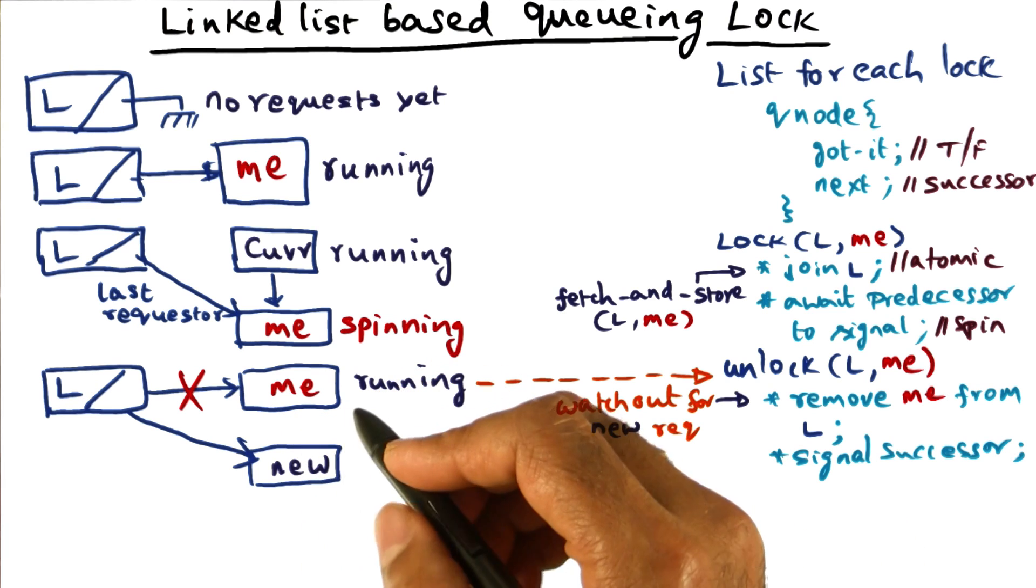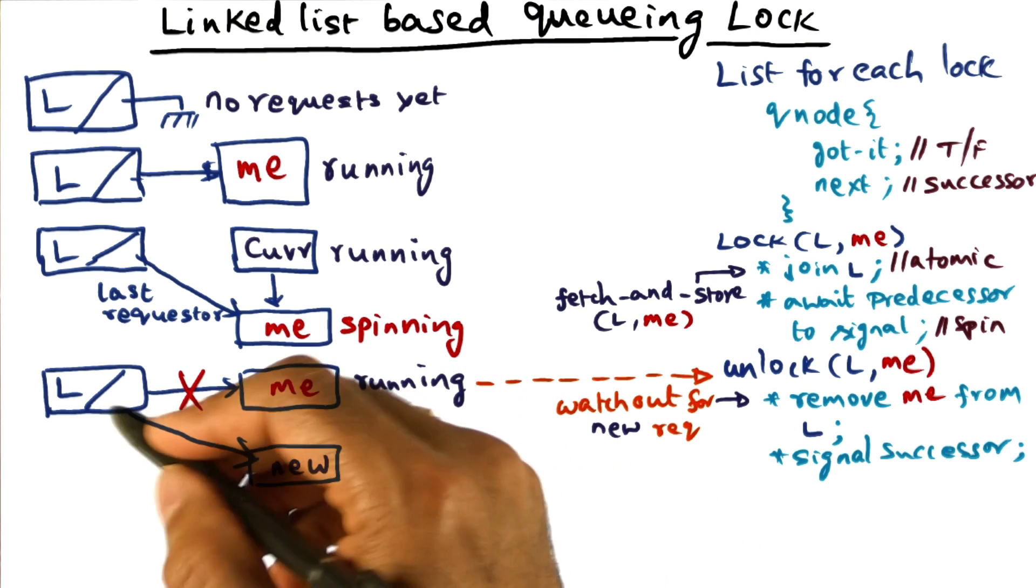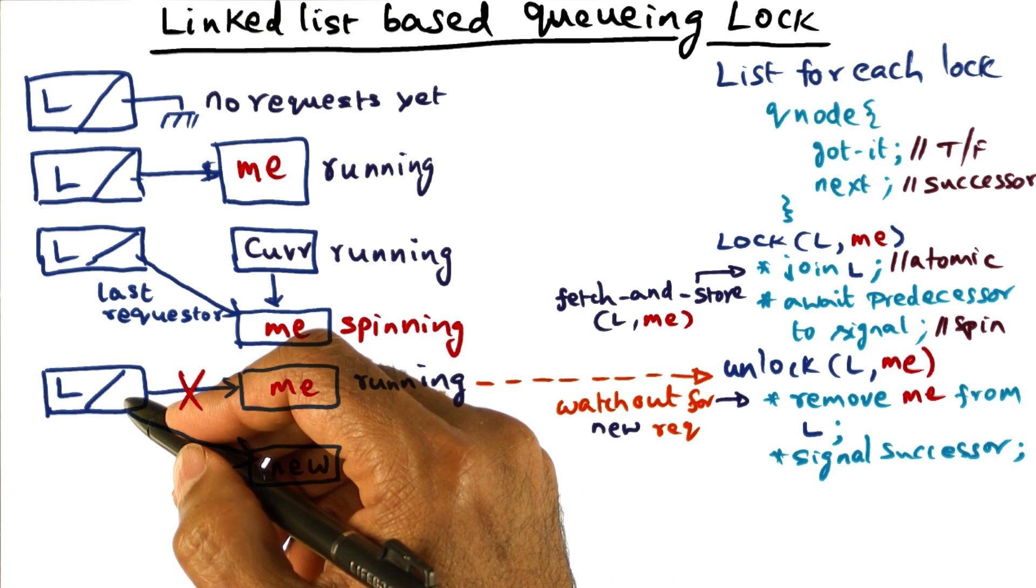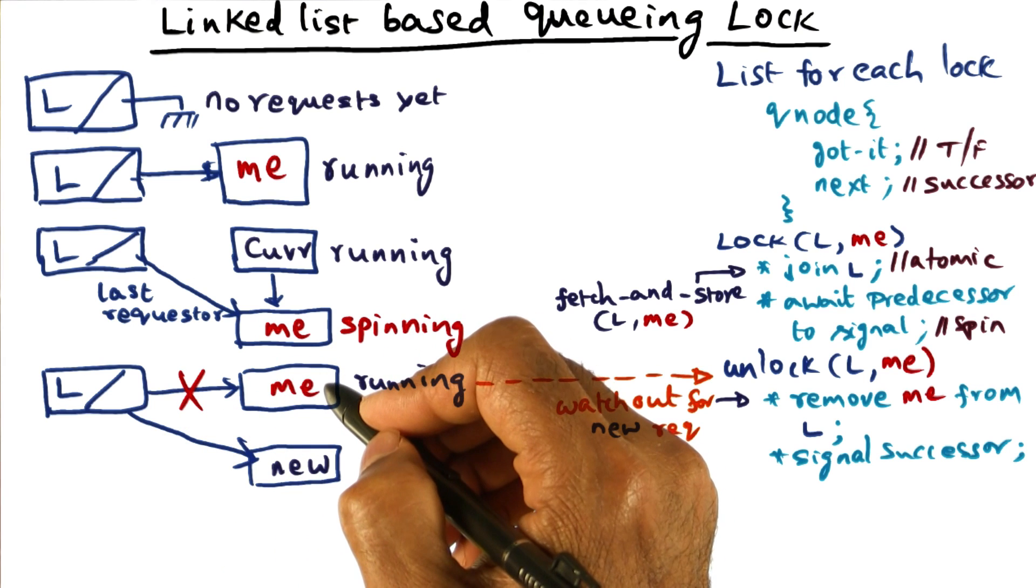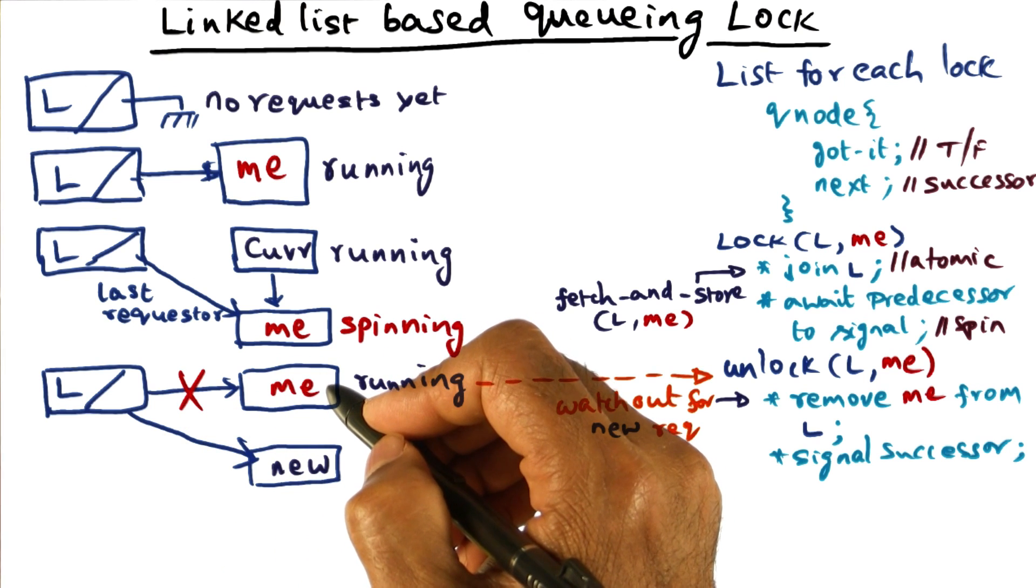So what should I do? Well, I remember what I told you. If I was the only guy, what I wanted to do was to set this guy to nil, to indicate that there's no requesters after me. The list is empty.